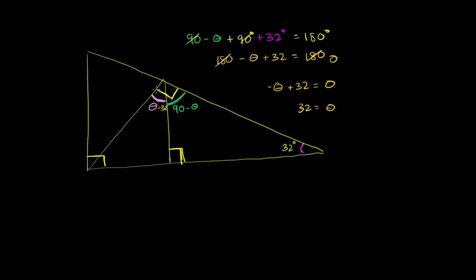So theta is actually going to be the same measure as the 32 degree angle. That's one way to do the problem — there are other ways. We could look at this big triangle over here and say: if this is 90 degrees and this is 32 degrees, then this angle up here is going to be 180 minus 90 degrees minus 32 degrees, because they all have to add up to 180 degrees.